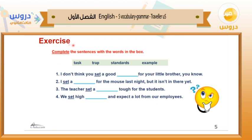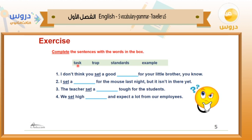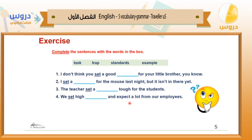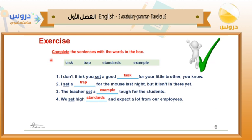Exercise: complete the sentences with the words in the box. The four words are: task, trap, standards, and example. Number one: 'I don't think you set a good ___ for your little brother.' Number two: 'I set a ___ for the mouse last night, but it is not in there yet.' Number three: 'The teachers set a ___ for the students.' Number four: 'We set high ___ and expect a lot from our employees.'